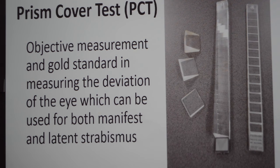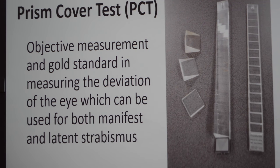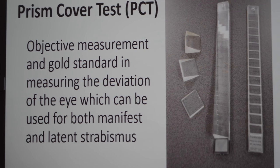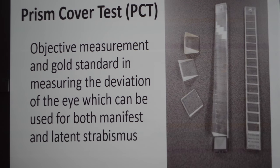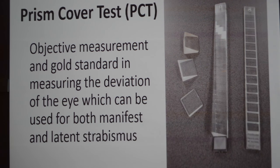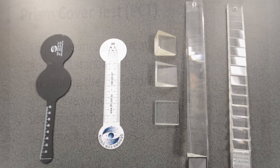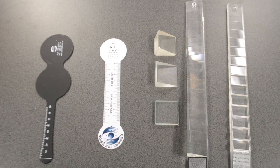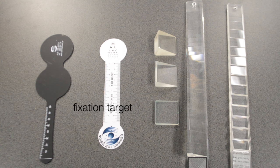The prism cover test is an objective measurement and gold standard in measuring the deviation of the eye, which can be used for both manifest and latent strabismus. To perform the prism cover test you will need an occluder, a prism bar, and an accommodative fixation target.